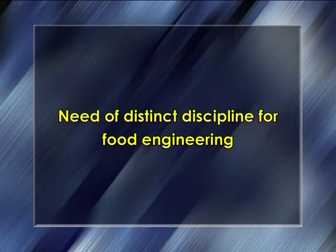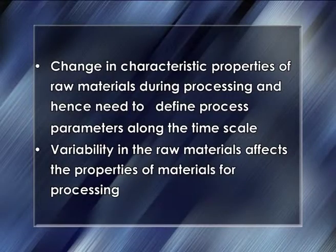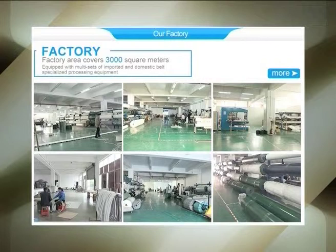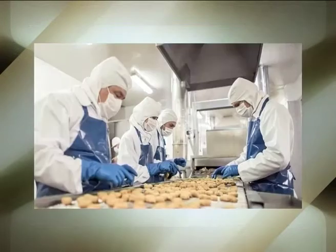Now let us discuss the need of a distinct discipline for food engineering. Food engineering is considered a distinct discipline compared to other engineering disciplines. The reasons include: change in characteristic properties of raw materials during processing requiring process parameters to be defined along the time scale; variability in raw materials affecting properties for processing; requirement of specialized and customized equipment for food processing; and strict maintenance of sterile and hygienic conditions to prevent spoilage. That's all about today's lecture. Hope you have understood it well. Thank you very much and goodbye.